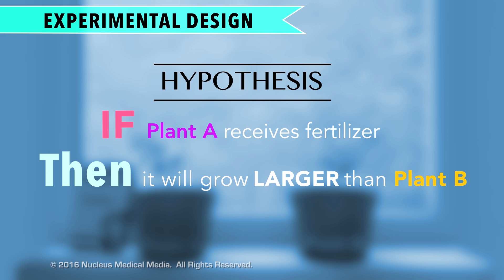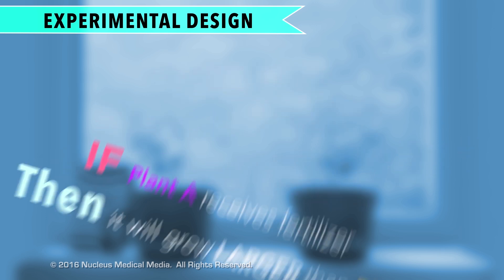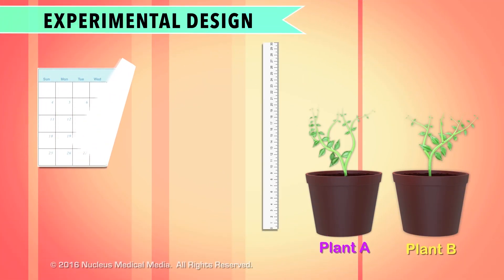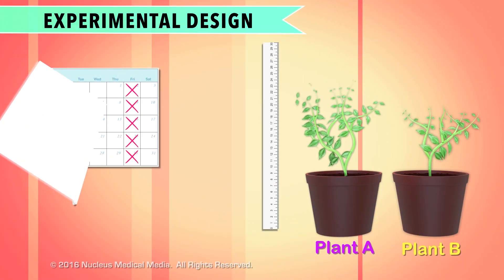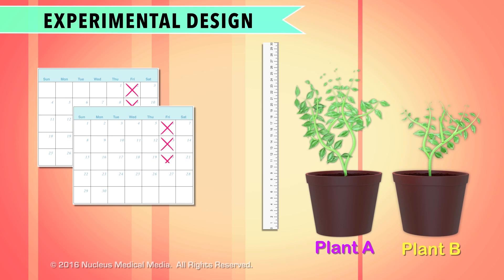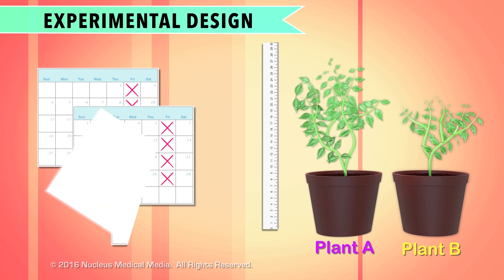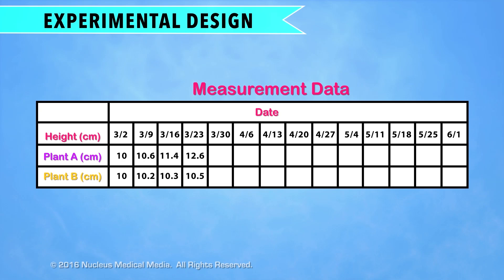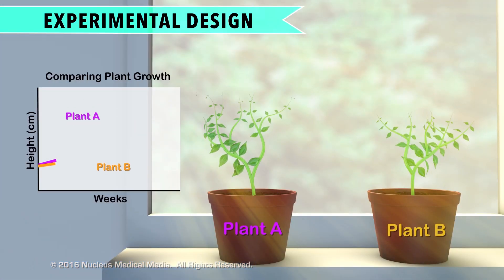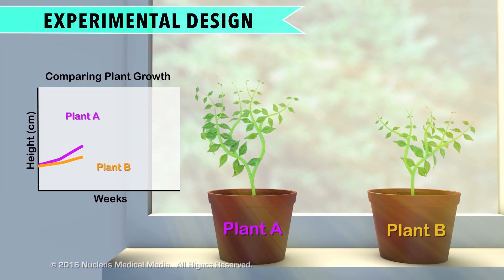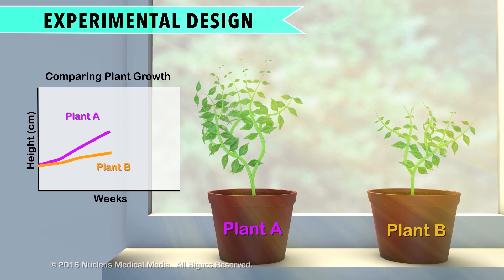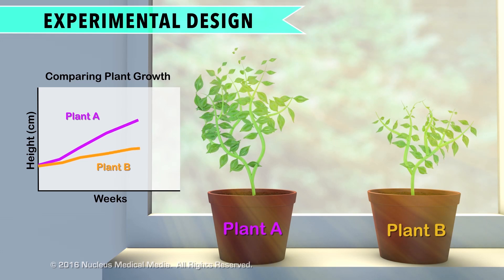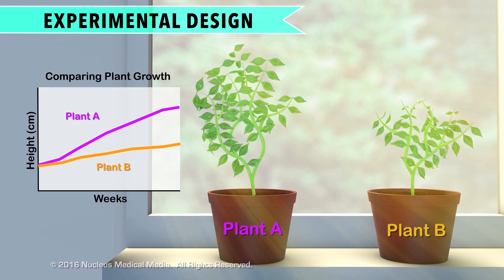How would you know whether your hypothesis is correct? You'd know because you'd regularly measure the plants during the course of the experiment, for example, once a week for a period of three months. You would record these measurements throughout the experiment. These measurements are your data. At the end of the experiment, you would look at your data and compare the measurements of plant A, which got fertilizer, to plant B, which didn't get fertilizer.